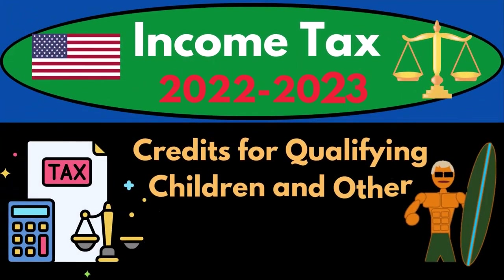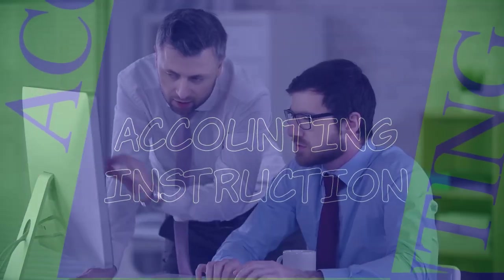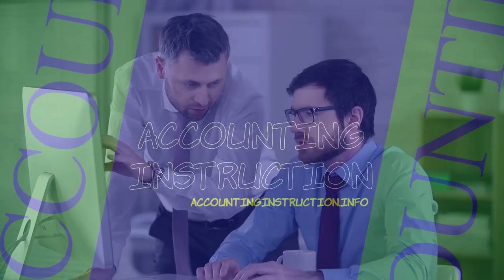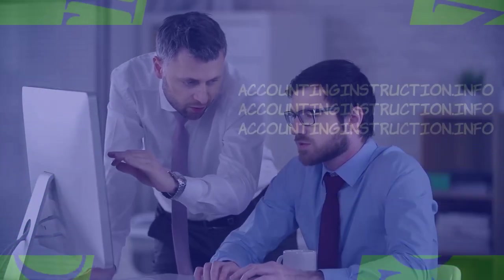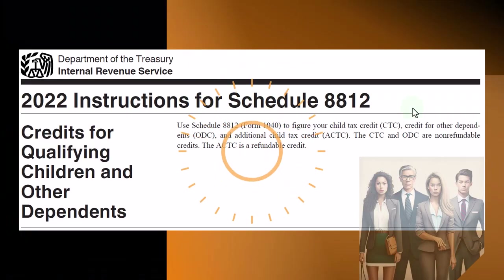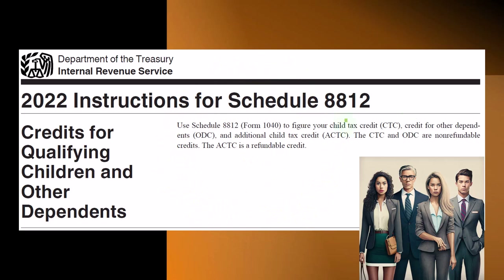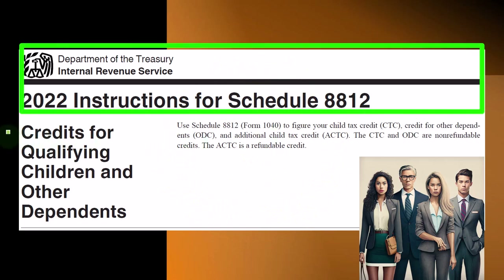Income Tax 2022-2023: Credits for Qualifying Children and Other Dependents, General Instructions. Most of this information comes from the Instructions for Schedule 8812, Credits for Qualifying Children and Other Dependents, Tax Year 2022.